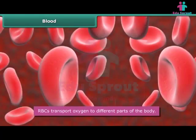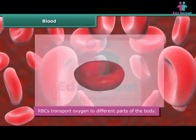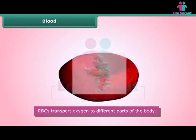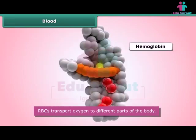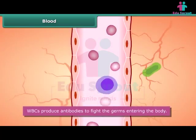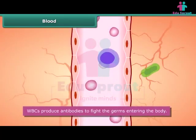RBCs are also known as erythrocytes. They are disc-shaped and contain a protein called hemoglobin, which is rich in iron and gives the blood its red color. Hemoglobin transports oxygen to different parts of the body.